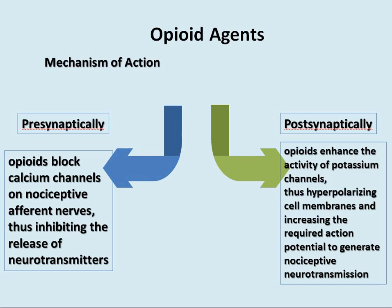Regarding opioid mechanism of action, they have two levels: presynaptic and postsynaptic. At the presynaptic level, they block calcium channels on nociceptive afferent nerves, inhibiting the release of neurotransmitters.